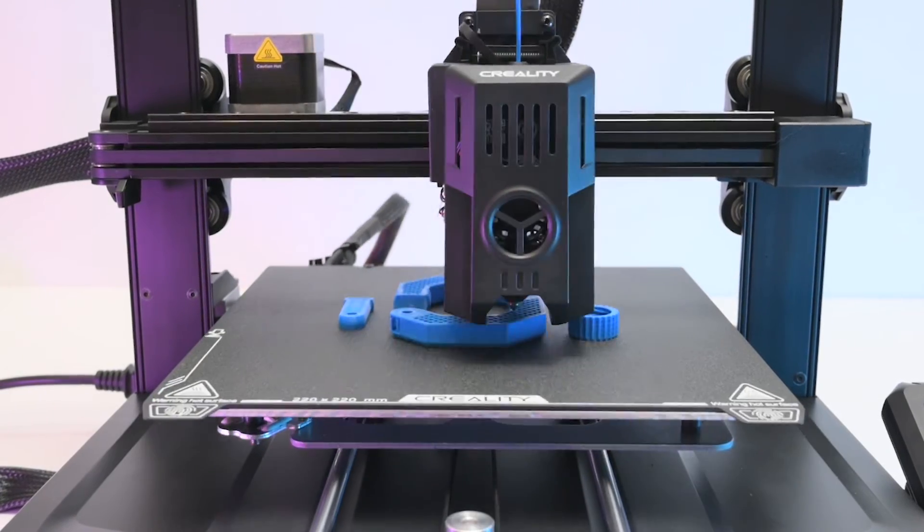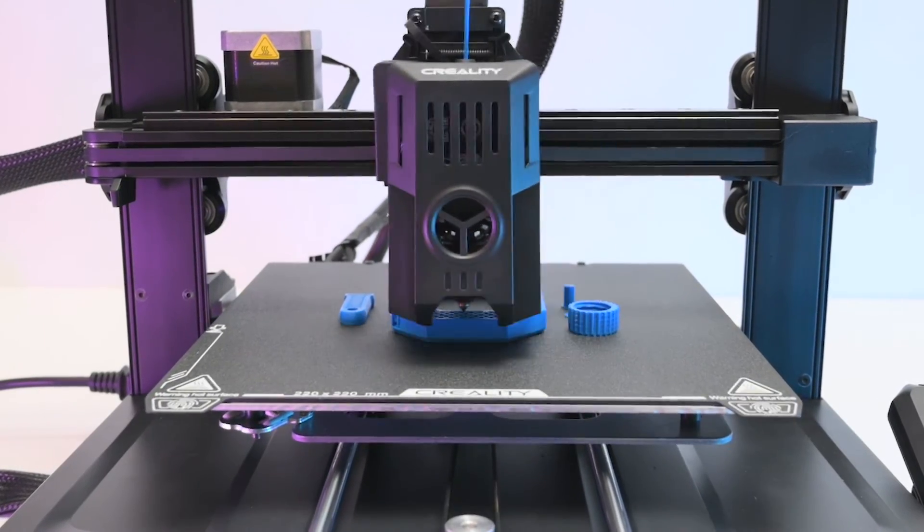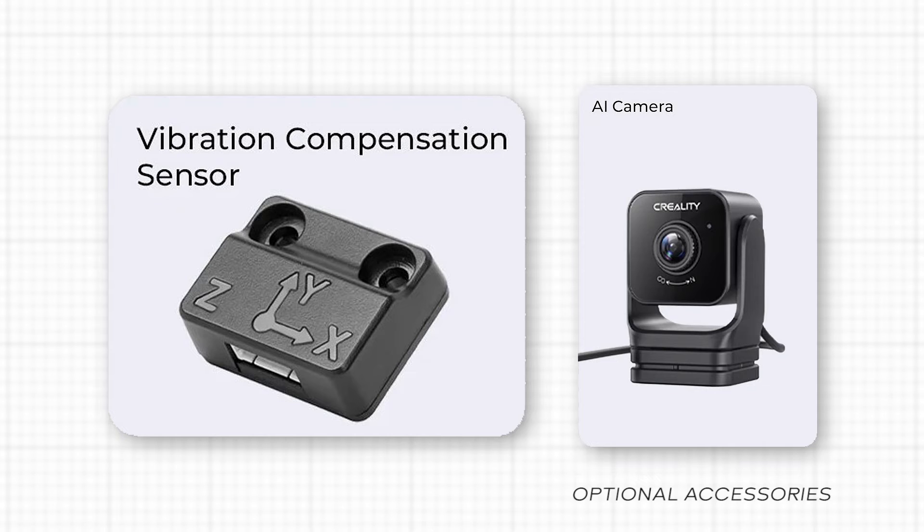The printer runs on a clipper based firmware and there's input shaping which has preset value but this can be further tuned by adding the optional vibration compensation sensor. There's also an optional USB camera that can be plugged in for real time monitoring and time lapse footage.